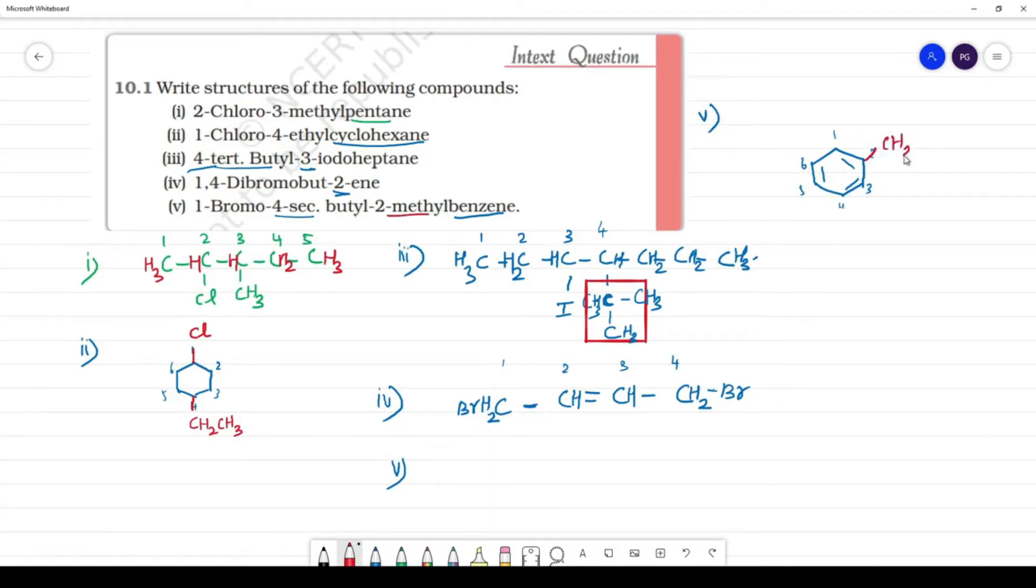2-methyl in the second position. In the first position, we have bromo. So here, bromo. In the fourth position, secondary butyl. Fourth position.